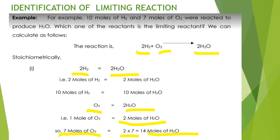Hydrogen produces 10 moles of water while oxygen produces 14 moles of water. The lesser quantity — 10 moles — is produced by hydrogen, so hydrogen is the limiting reactant. Oxygen is in excess. To summarize: the limiting reactant is found by comparing mole ratios of each reactant to the product; the substance producing the least moles of product is the limiting reactant.